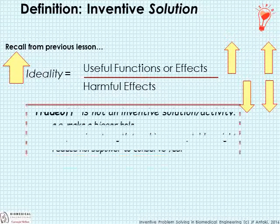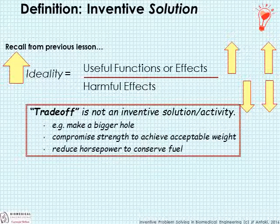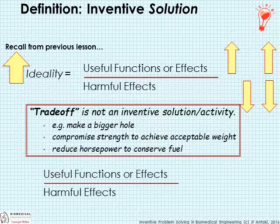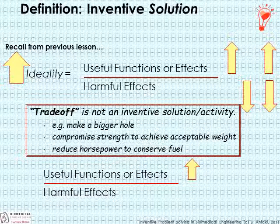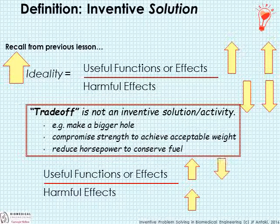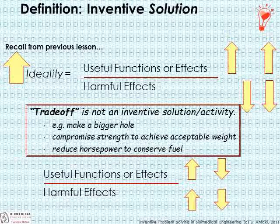This is contrasted with a trade-off — a common solution to a problem, but not an inventive solution. For example, making a bigger hole, compromising strength to achieve acceptable weight, or reducing horsepower to conserve fuel. In a trade-off, we may improve useful functions but pay a price in terms of harmful effects, or we decrease useful functions in order to reduce or eliminate harmful effects.